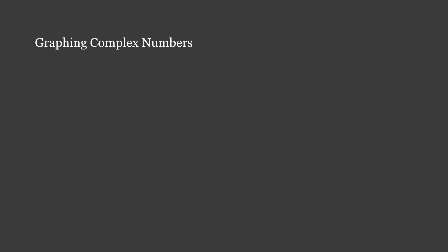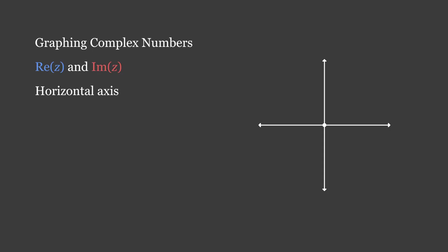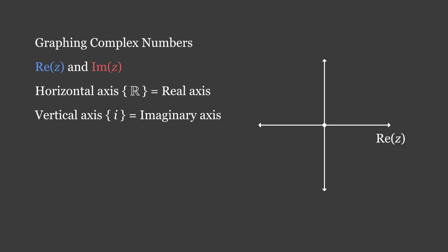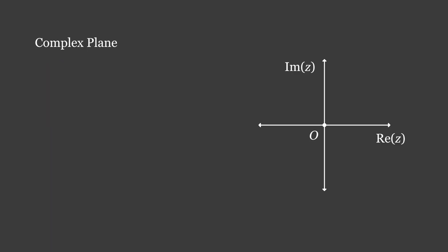To begin graphing complex numbers, we construct a two-dimensional plane with axes that correspond to the two parts of a complex number. Let the horizontal axis contain all real numbers — the real axis, Re(z) — and the vertical axis contain all imaginary numbers — the imaginary axis, Im(z). We can label the origin as the point (0,0). Here, we have just discovered the complex plane, otherwise known as an Argand diagram, where we can plot complex numbers.